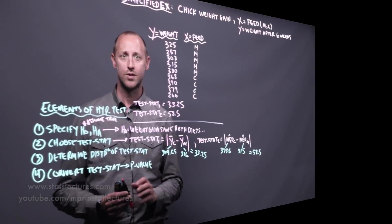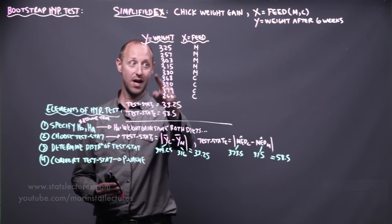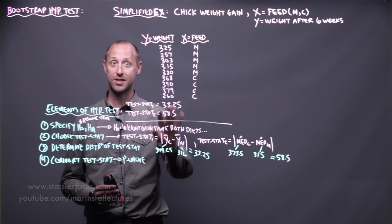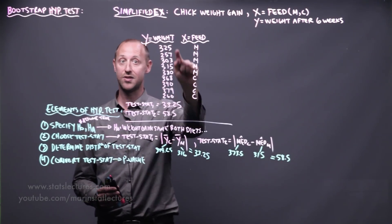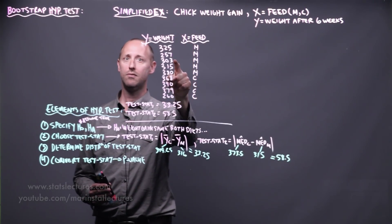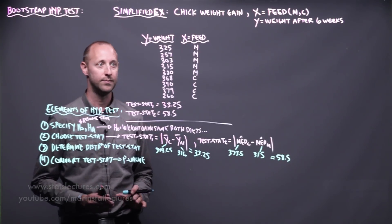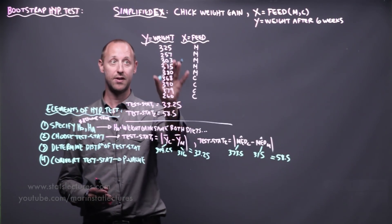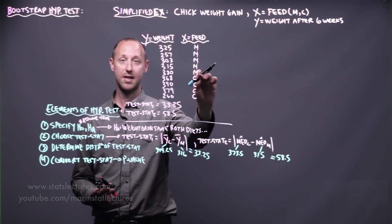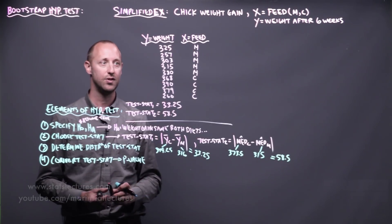With bootstrapping, assuming our null hypothesis is true is the same as assuming that all nine observations come from the same distribution — the feed type is irrelevant. If the weight gains are the same on the two feed types, then an observation that belonged to meat meal could just as easily have belonged to casein. So we're going to generate new bootstrap samples by resampling with replacement from our observed data — randomly sampling five observations and assigning them to meat meal, and four to casein.